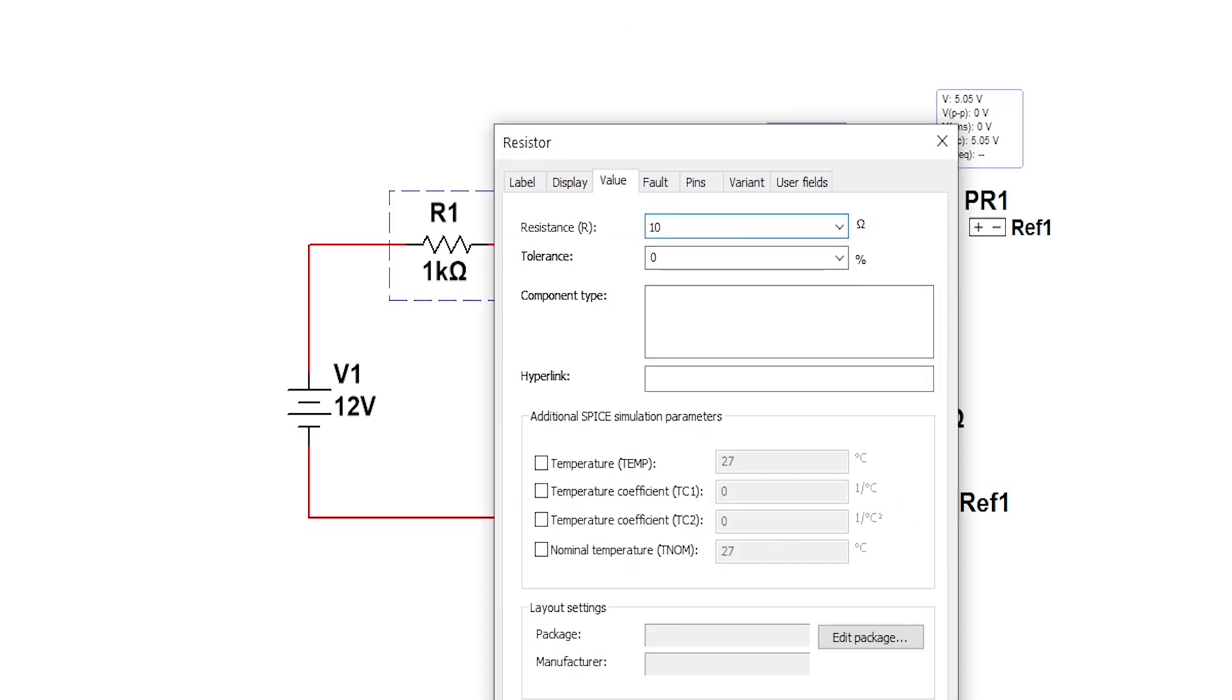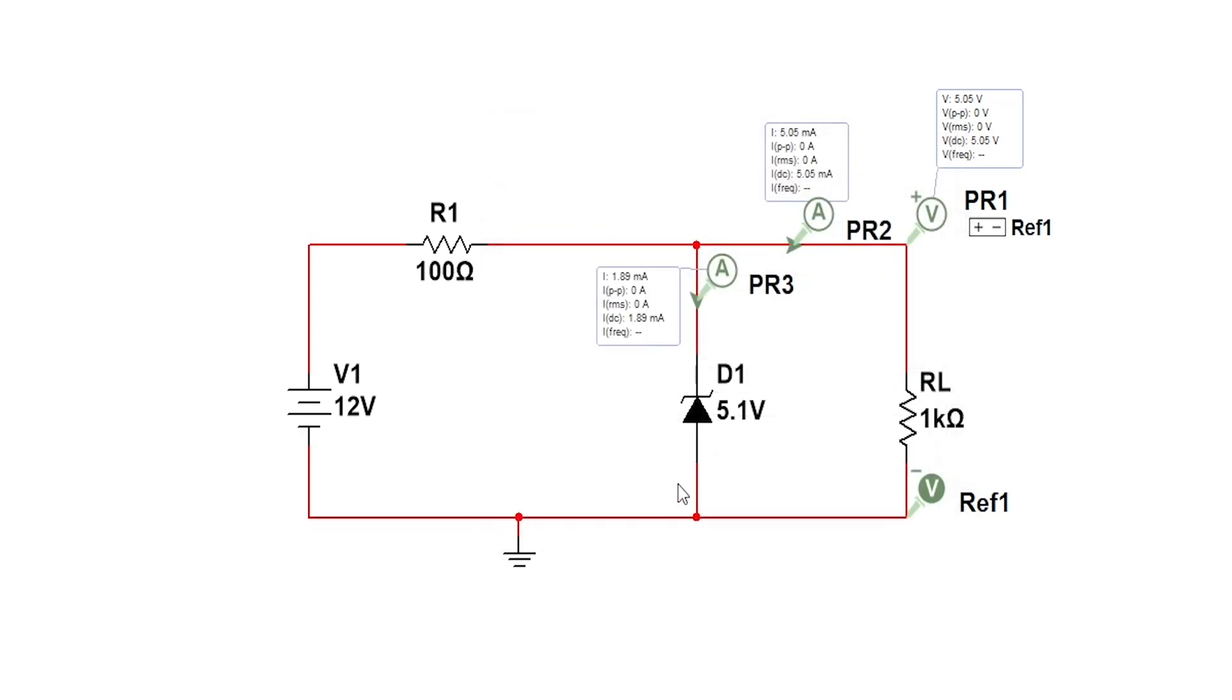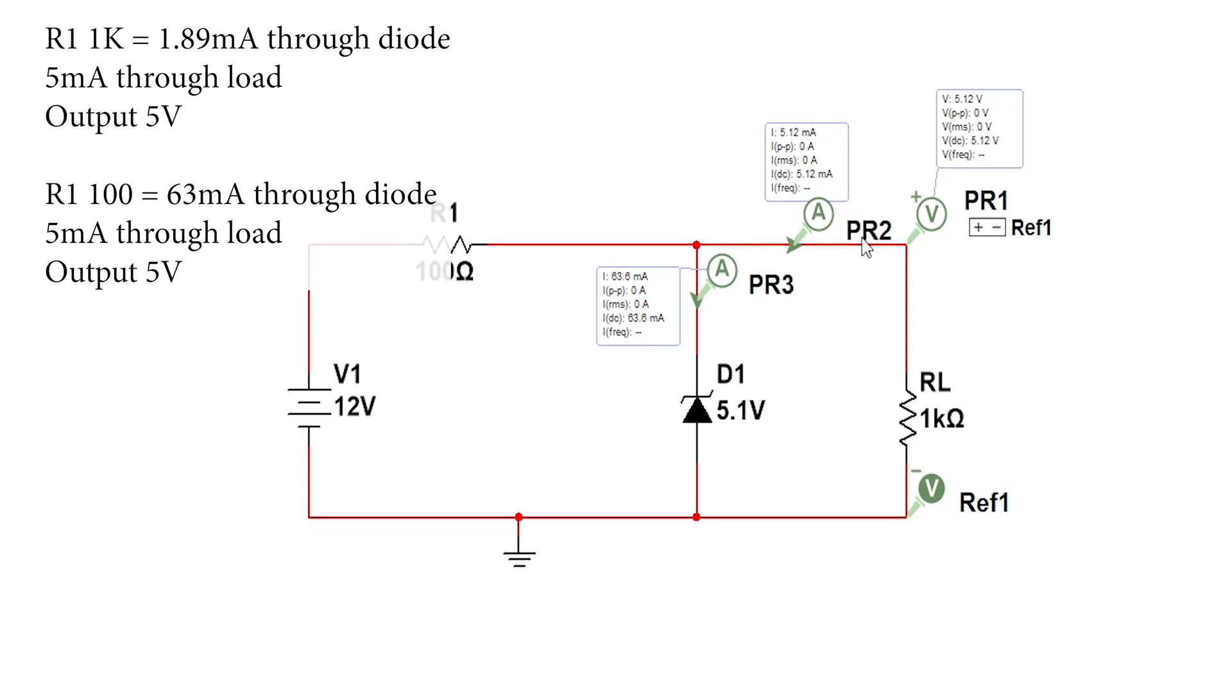We're at 1.89 milliamps through the diode at the moment and 5 milliamps for our load. Now you can see we've got 60 milliamps for our diode, still 5 milliamps for our load, and we still got 5 volts across our load. So 100 ohms would do, however you better have a decently power rated resistor or that might burn out.